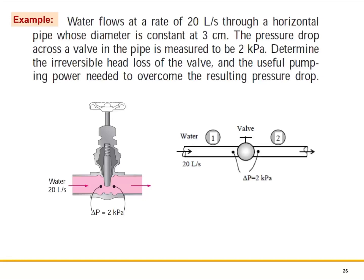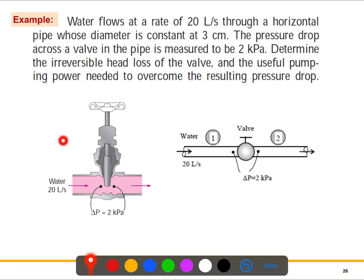This is another question related to the energy equations. Here we have this schematic where water is flowing this way. We have the flow rate, this is a horizontal pipe, and the diameter is constant.